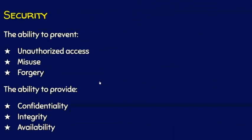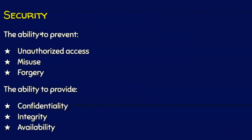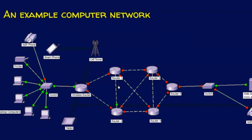Now we shall see the final characteristic of computer networks: security. It is the ability to prevent unauthorized access, misuse, or forgery. And not only prevention — the network should also provide confidentiality, integrity, and availability.